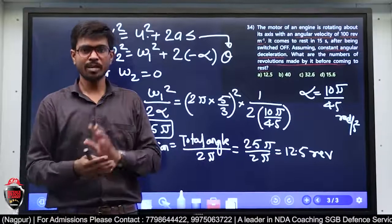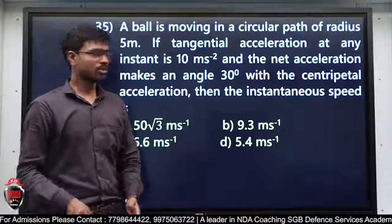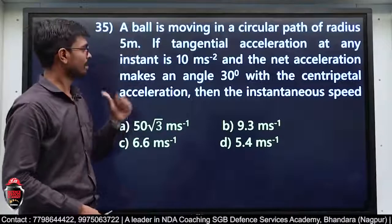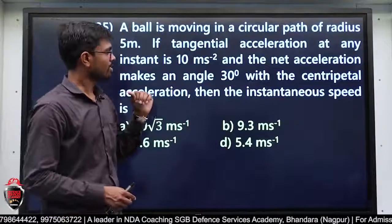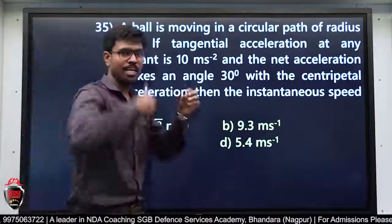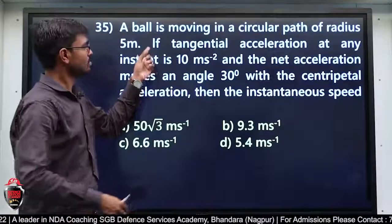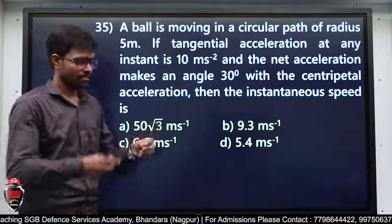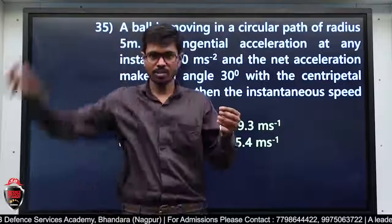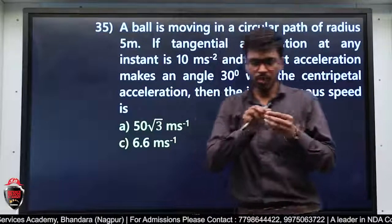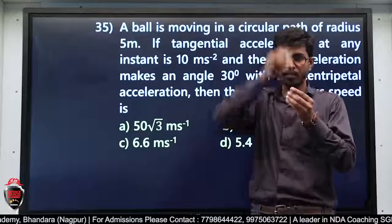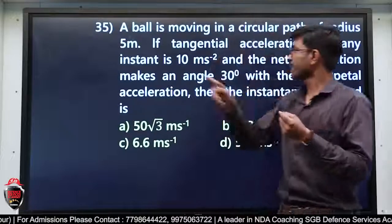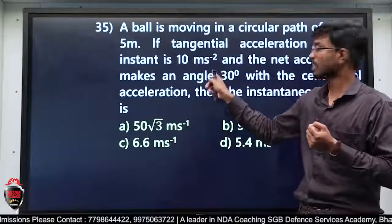इसके बाद का numerical देखते हैं। बच्चों हमारा next question: A ball is moving in a circular path of radius 5 meter। If tangential acceleration at any instant is 10 meter per second square, and the net acceleration is making angle 30 degree with centripetal acceleration — instantaneous speed निकालना है।